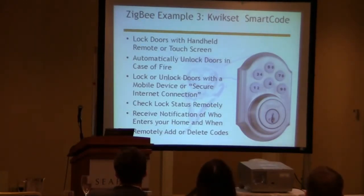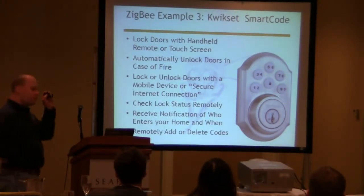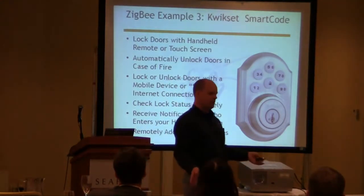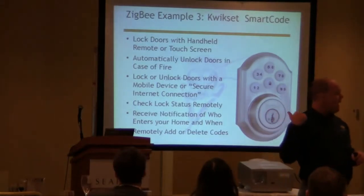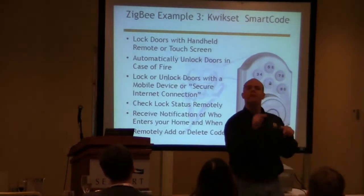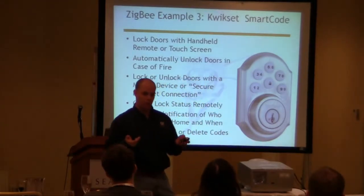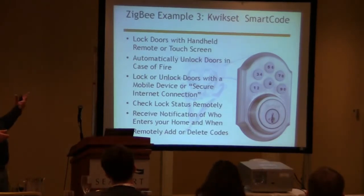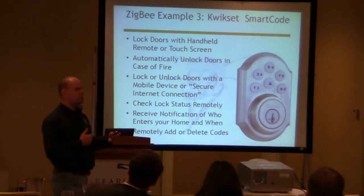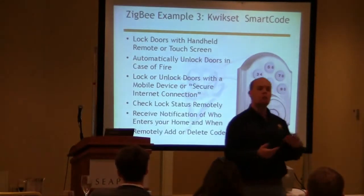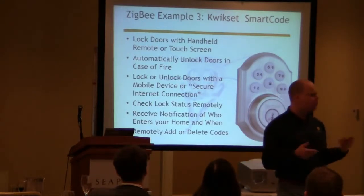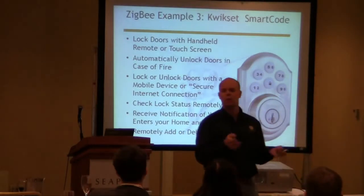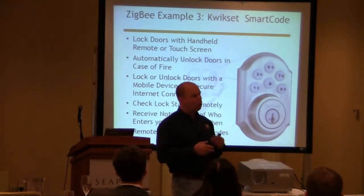Kwikset is now making Zigbee-controlled locks for your home. They make a unit with a little touchpad on the door where you enter a combination to unlock it. The lock system talks over Zigbee to a box in your house, and that box decides whether the code should let somebody in. You can provision it so that if you've got a repair guy coming over, you can give him a one-time code, let him in, and after the door closes, nobody else can use it again — all over Zigbee.